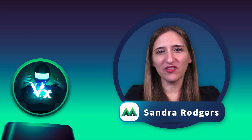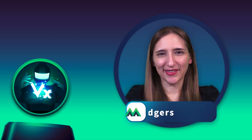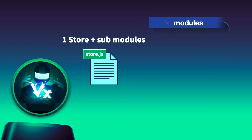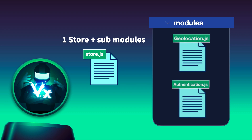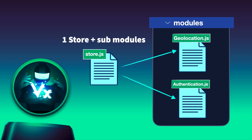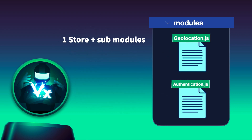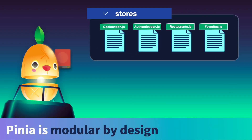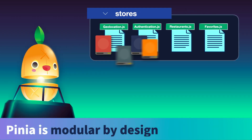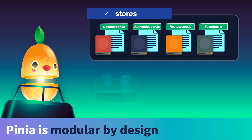One of the most important features of Pinia is its modular stores. If you worked with Vuex, you might remember that we had one root store file and modules that broke off from that. Pinia, on the other hand, is modular by design. We create stores devoted to each major logical concern of our app, and then import those stores where they're needed.